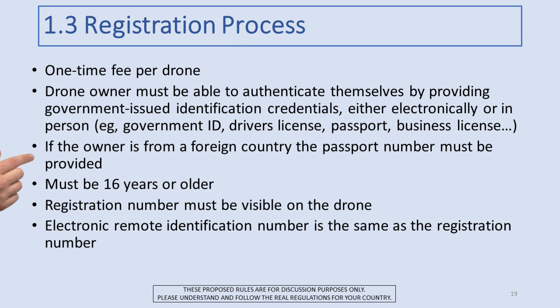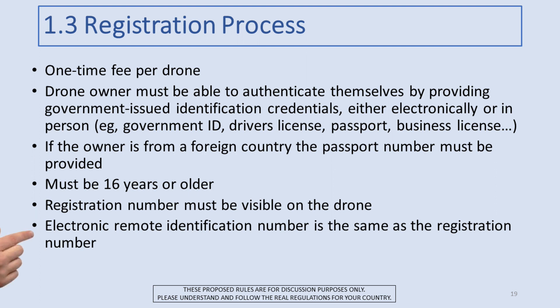If you're flying your drone as a tourist — coming into another country with your drone — you should actually have to register that drone in the country where you'll be flying. When you do so, you register with your passport number. Because situations requiring registration are situations of high accountability, you must be 16 years old or older to be eligible to register. The registration number itself should be visible on the drone, and the electronic remote identification number should be exactly that same registration number — following the basic notion of a car license plate.